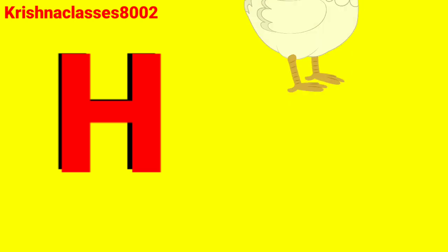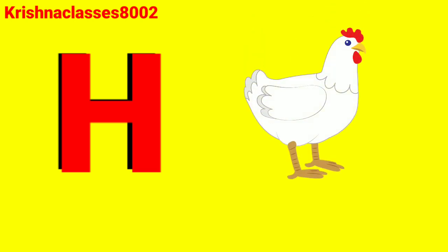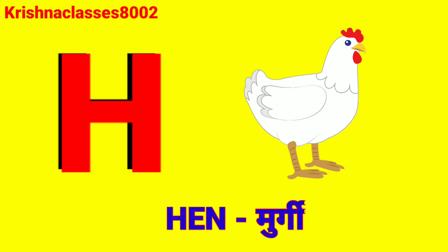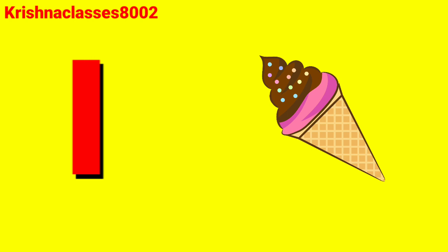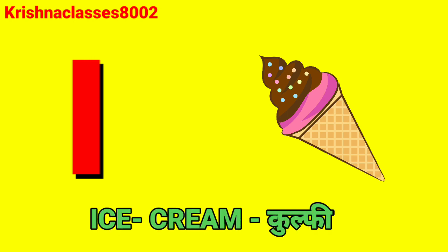H for hen. Hen means murgi. I for ice cream. Ice cream means kulfi.